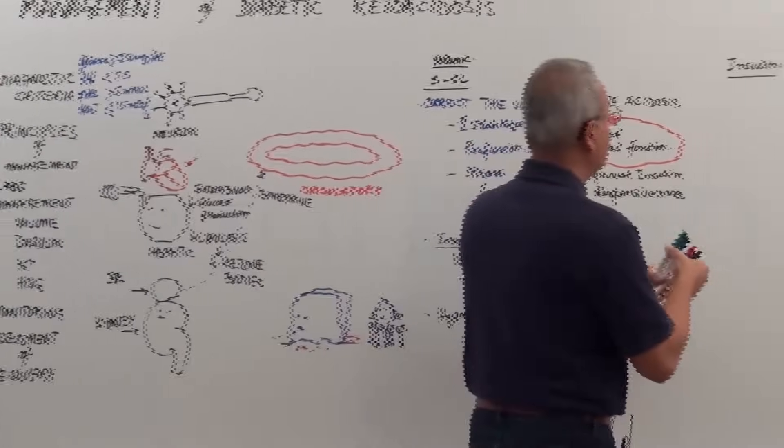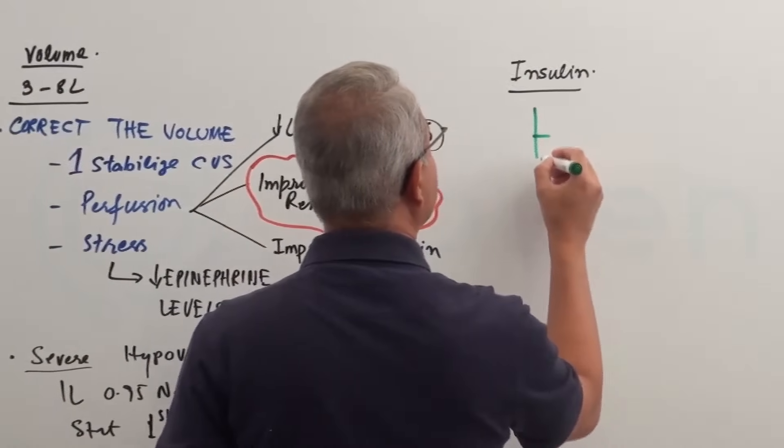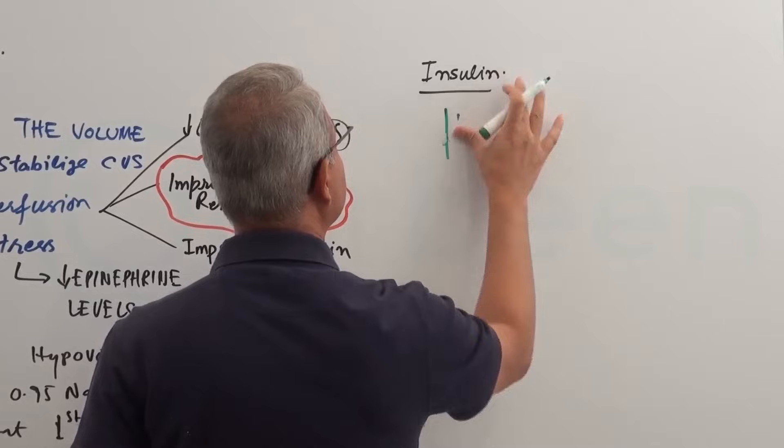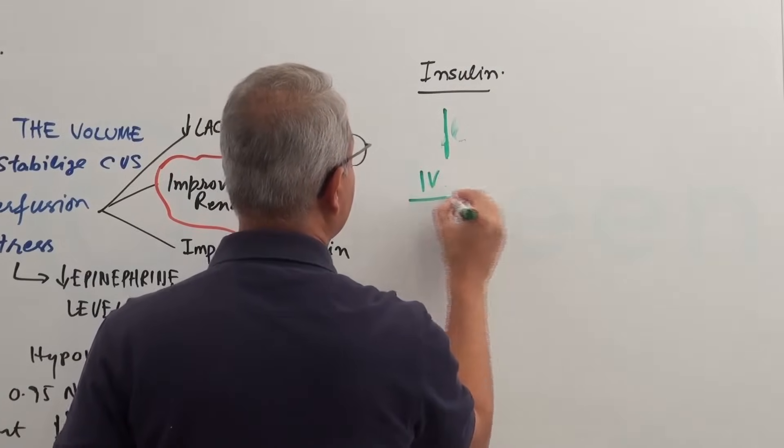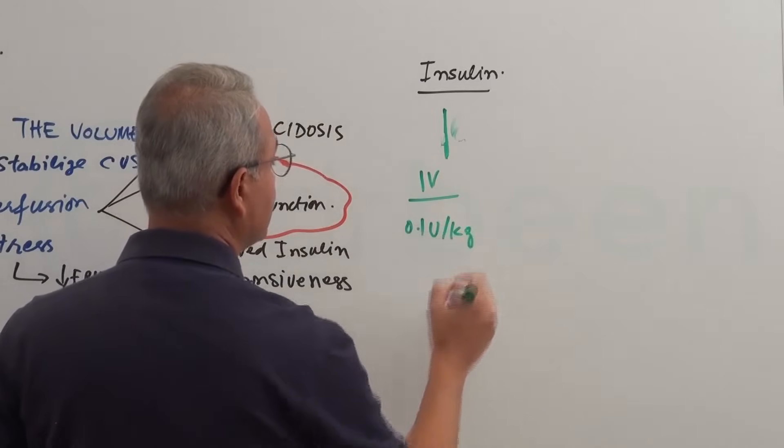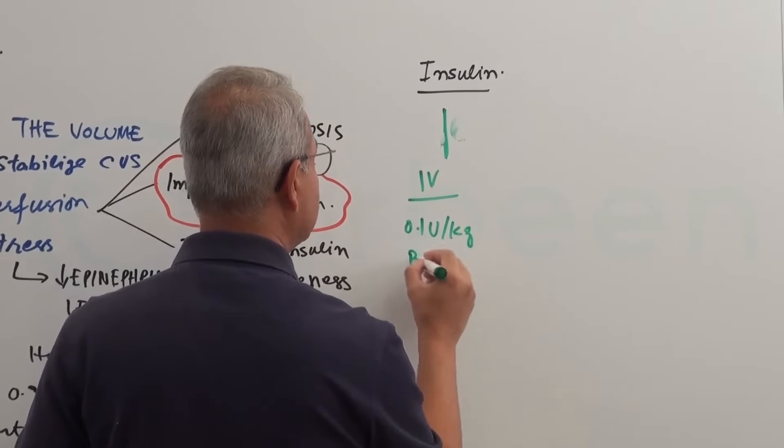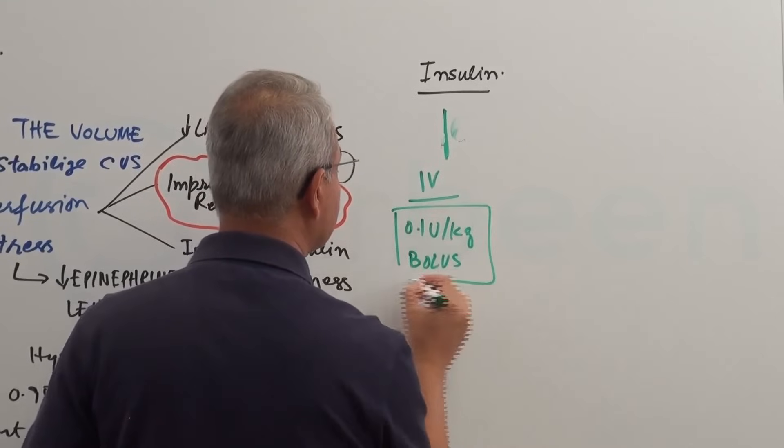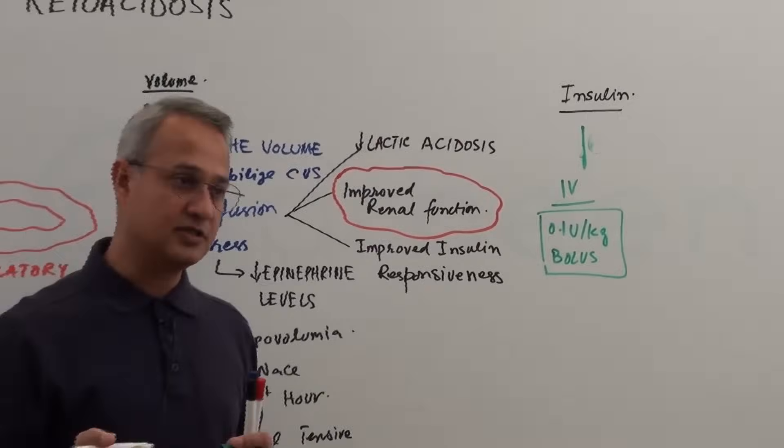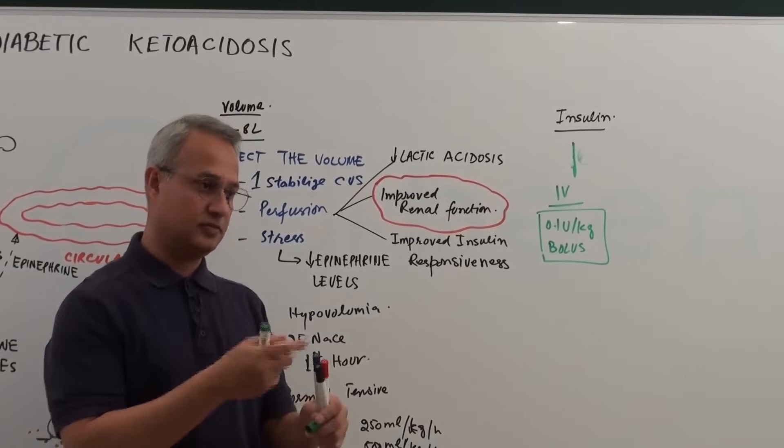Now, how do you administer insulin? You give IV insulin. First, you take 0.1 units per kilogram as a bolus. So for a 70 kilogram person, this will be 7 units that you infuse as a bolus administration.